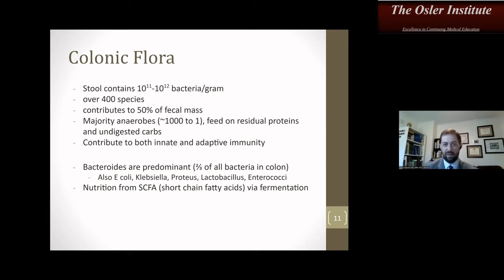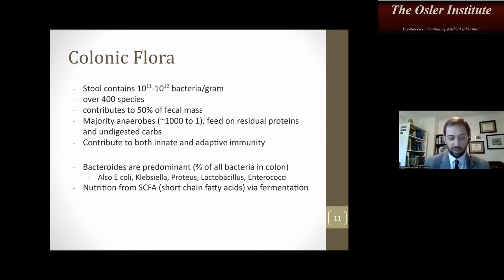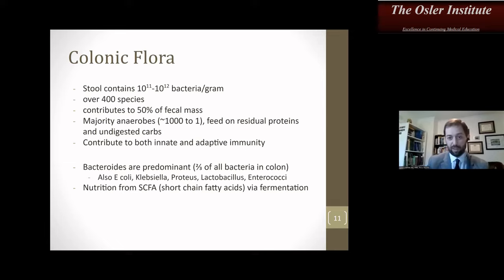Colonic flora: 10^11 to 10^12 bacteria per gram — an astronomically large number — over 400 species. They contribute to 50% of the fecal mass by weight. The majority are anaerobes at a ratio of 1,000 to 1. They feed on residual proteins and undigested carbohydrates, and contribute to innate and adaptive immunity. Bacteroides is the most common, comprising two-thirds of all bacteria in the colon. Don't forget gram negatives like E. coli, Klebsiella, Proteus, Lactobacillus, and Enterococci. Short-chain fatty acid fermentation is also a key contribution.